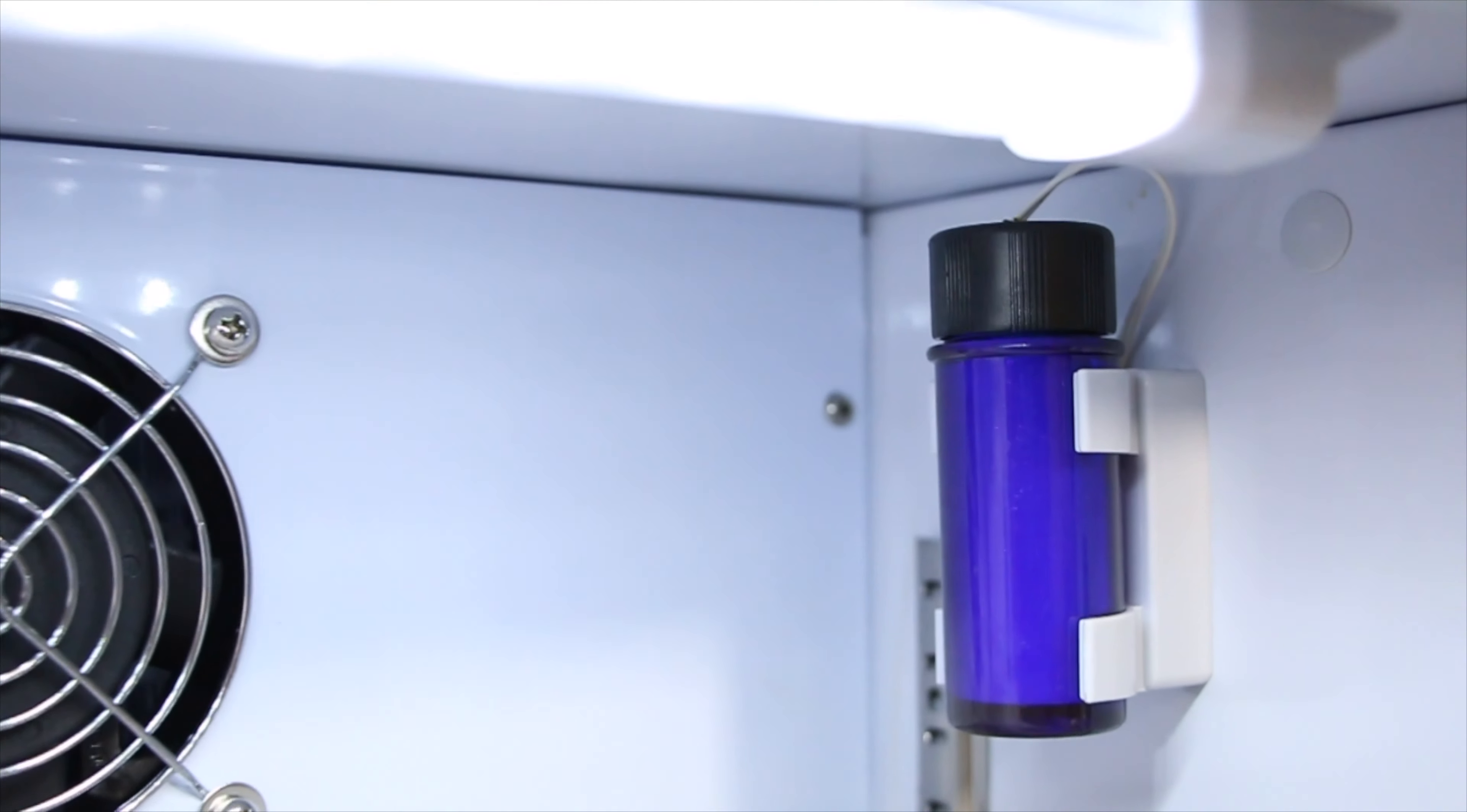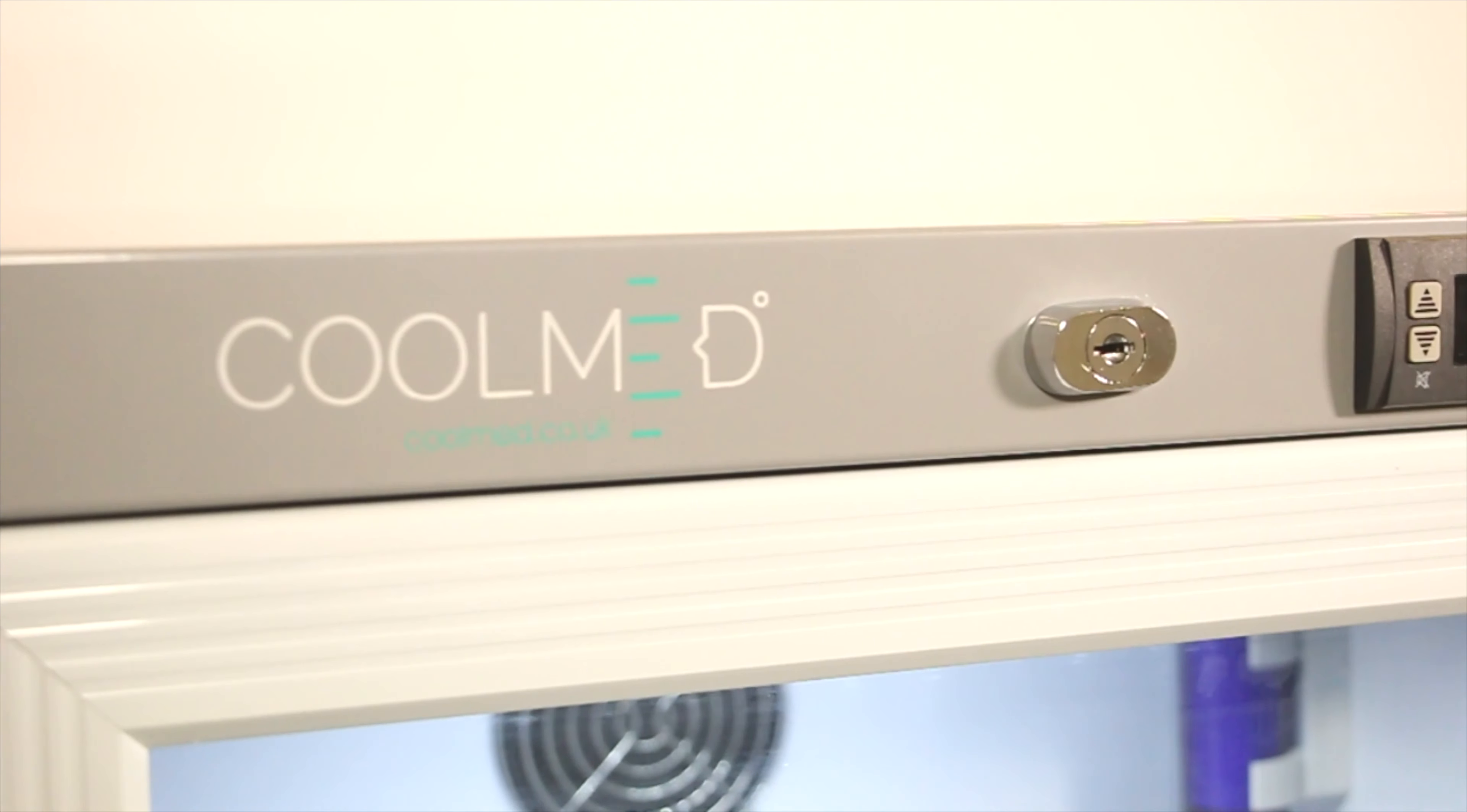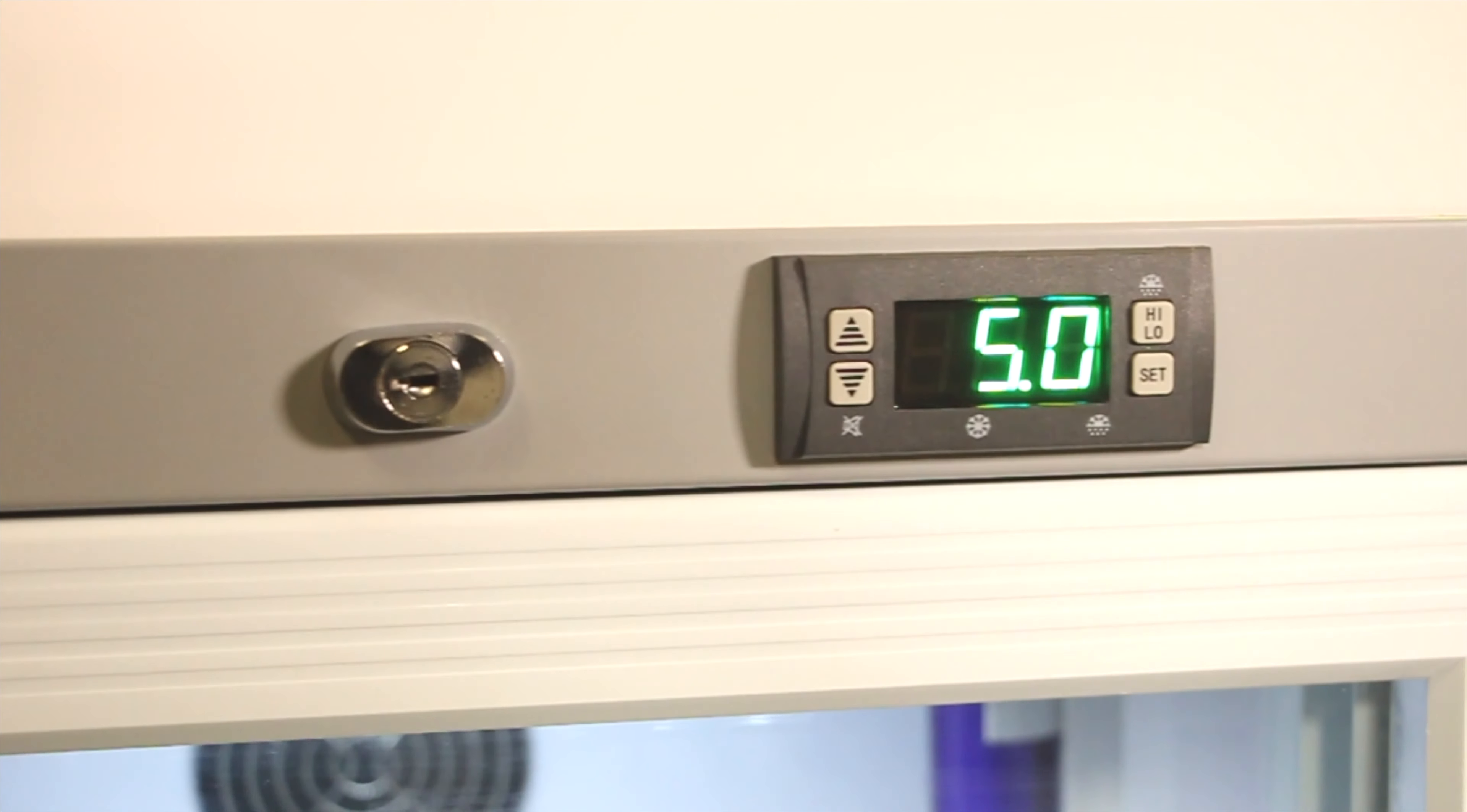This fridge features a built-in temperature probe which accurately monitors and stabilizes drug temperatures. The temperature of this fridge is factory set between 2 and 8 degrees. You can then set the temperature between these points using the controller. The fridge will be preset at 5 degrees.